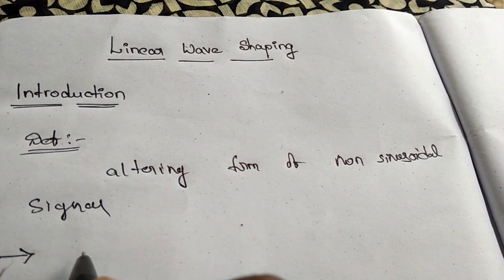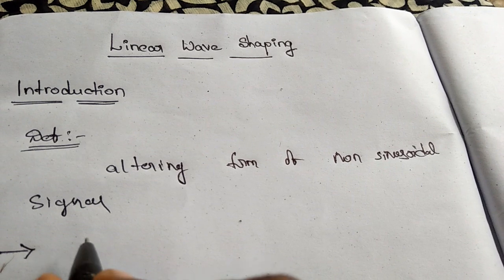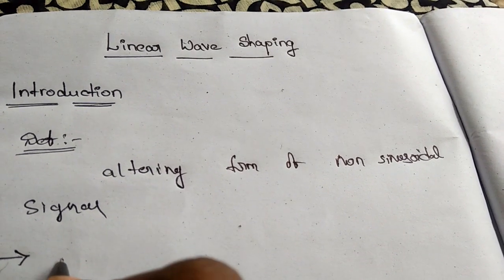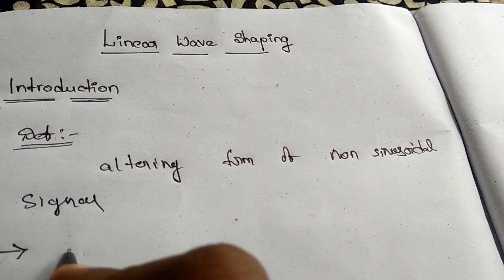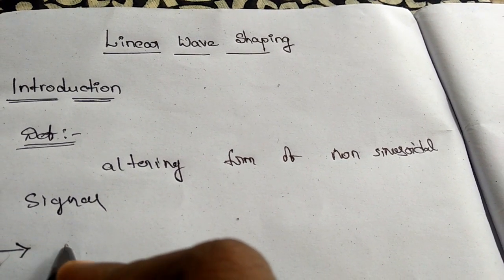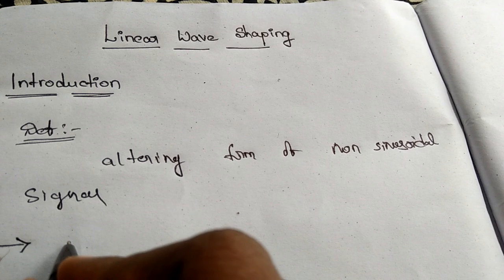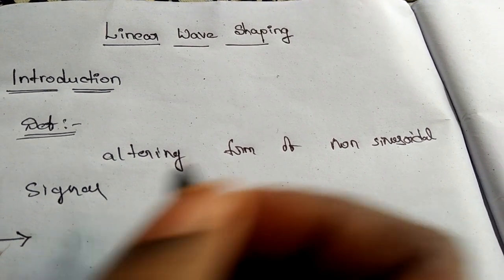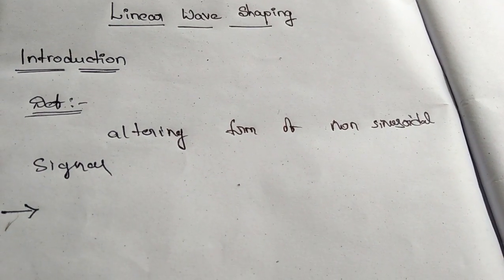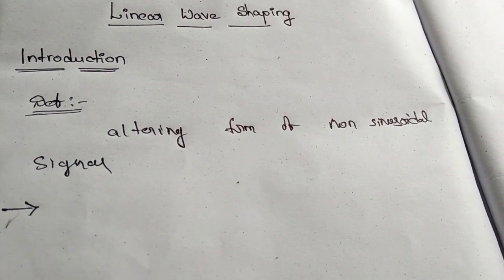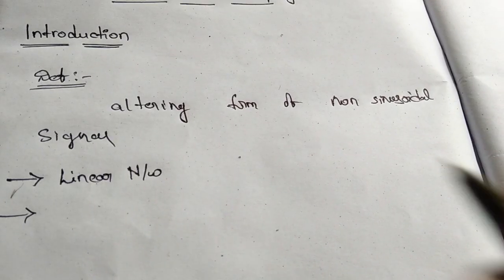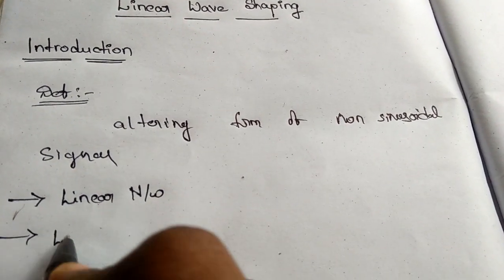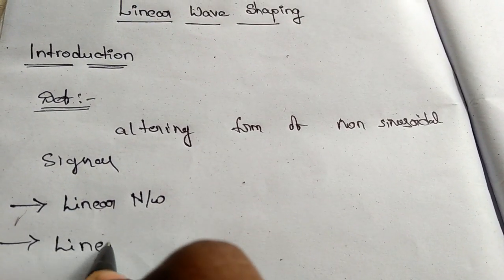What is a Linear Network? A Linear Network is designed by Linear Elements and it obeys Homogeneity and the Principle of Superposition. Now, about Linear Elements.